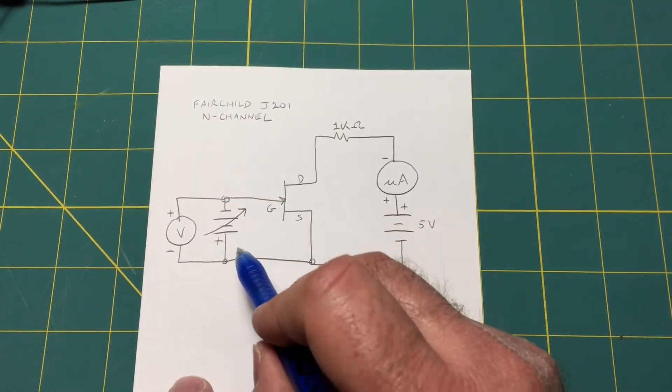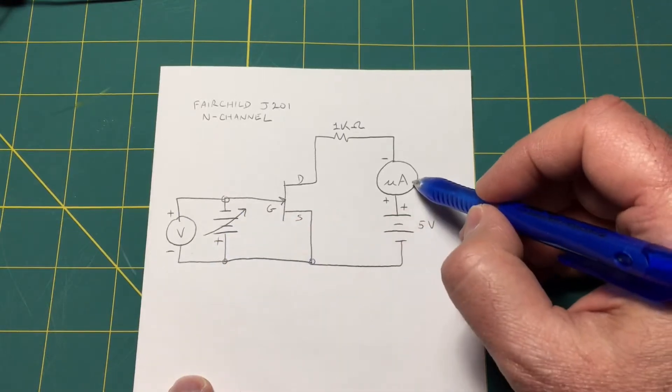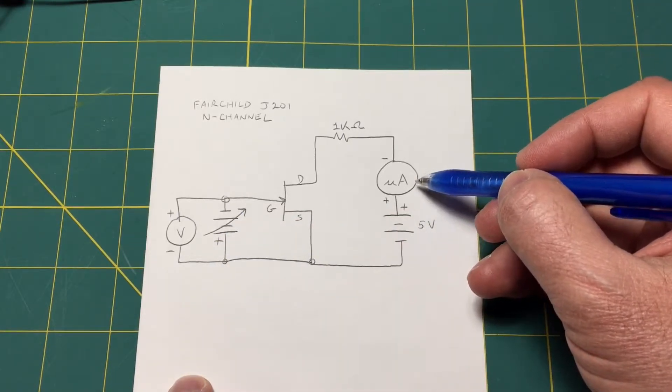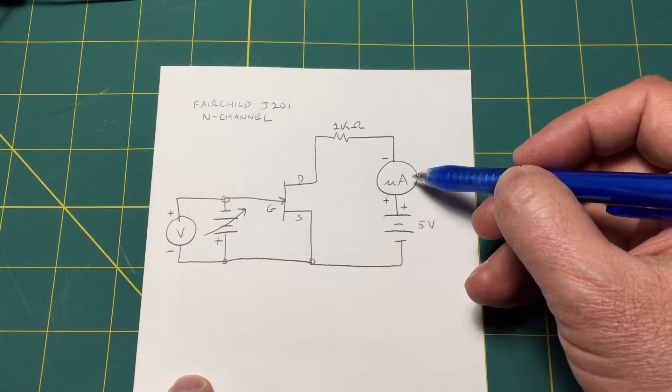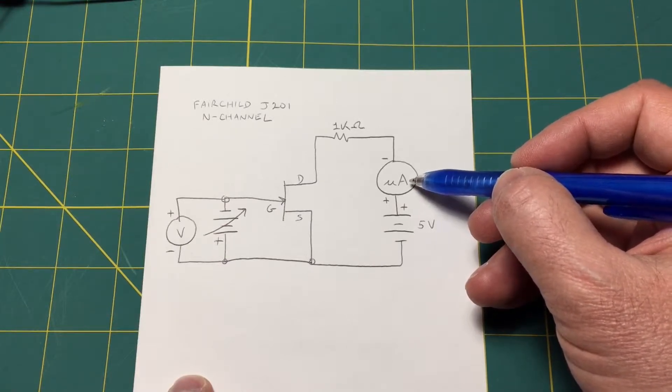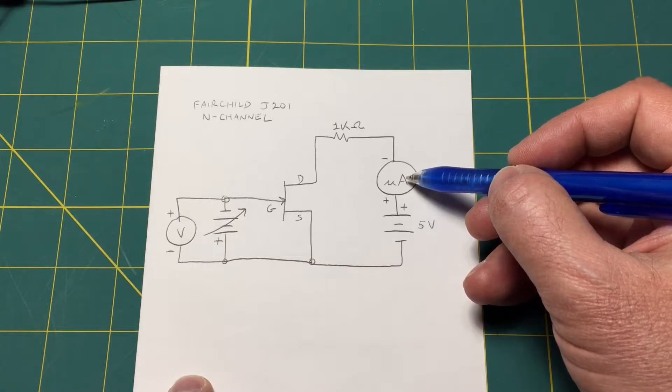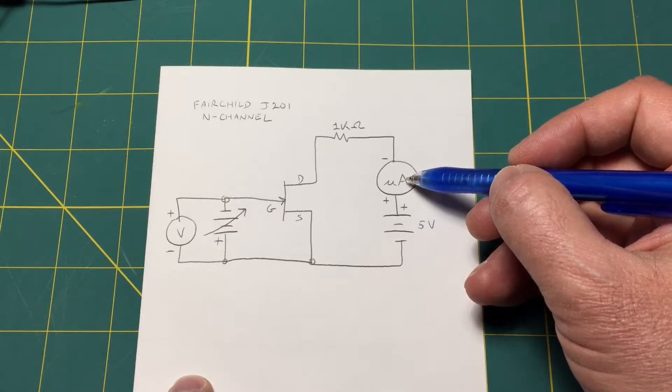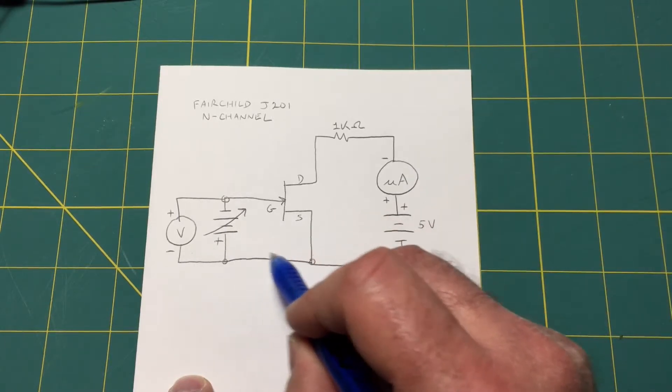What we're going to do is vary the gate voltage and observe the drain current. At one point we should be able to get the drain current to go to zero. At another point drain current will go to maximum when the gate voltage is at zero.